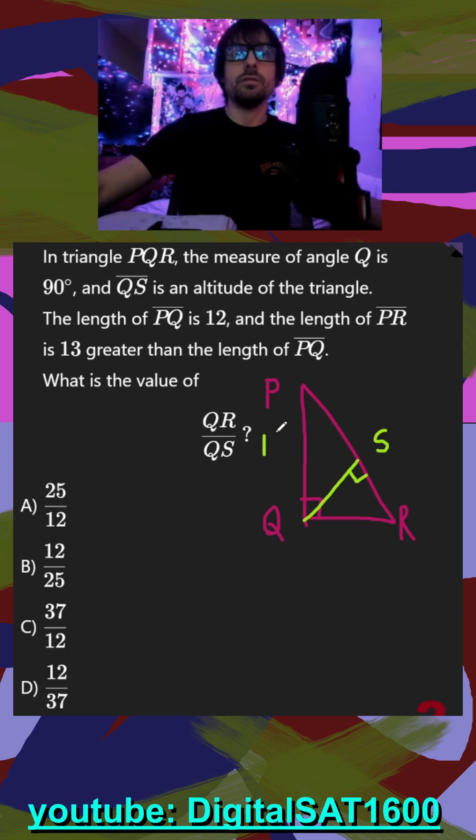They also tell us that PQ is 12, and the length of PR is 13 greater than PQ. So that's this whole hypotenuse. This whole hypotenuse is just going to be 25. And they want to know the value of QR over QS, which does involve our altitude.